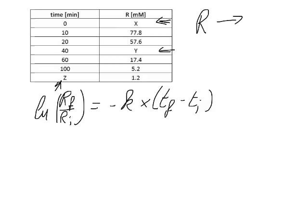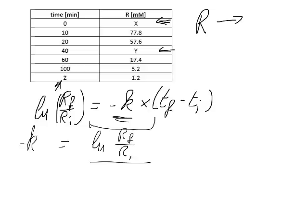The first thing we need to do is find k. We don't have any values for k, but we can rearrange the equation to get it. So: −k = ln(r_final / r_initial) / (t_final − t_initial). I've now solved this equation for k.